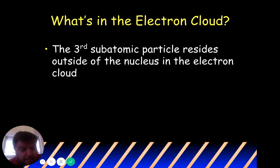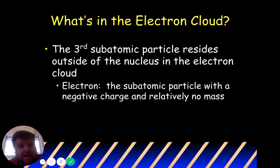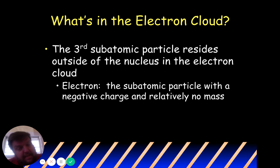The third particle is the electron. The electron has a negative charge. As we learned in a previous unit, opposite charges attract — so the protons in the middle and the electrons are going to want to come together, because protons are positive and electrons are negative. But the neutrons act as buffers in between to keep them apart.